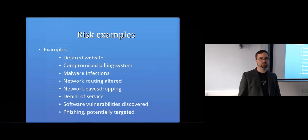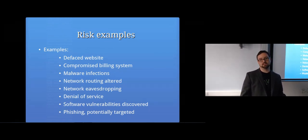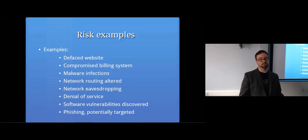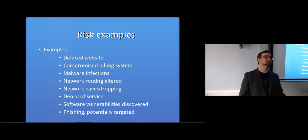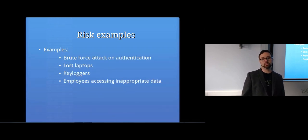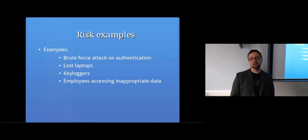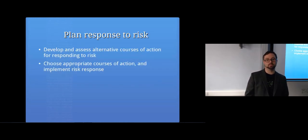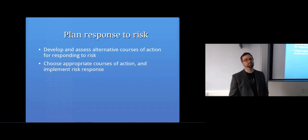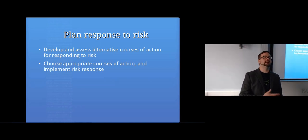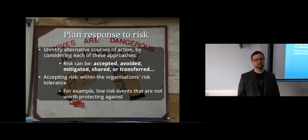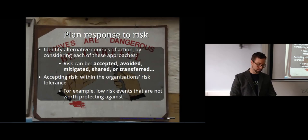There are all sorts of things that could happen in an organization: a defaced website, a compromised billing system, malware, network routing altered, network eavesdropping like a man-in-the-middle attack, denial of service attacks, software vulnerabilities like SQL injection, phishing targeted at employees or customers, brute force attacks against your servers, lost laptops, key loggers installed on employee machines, or employees accessing inappropriate content. In each case there'd be multiple ways you could deal with it, and you need to choose the appropriate course of action based on the organization's needs.